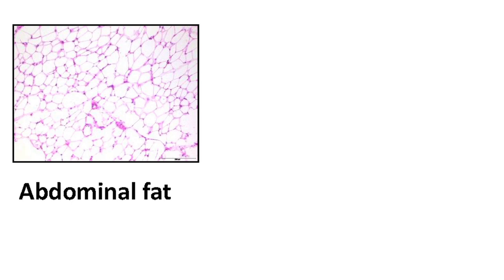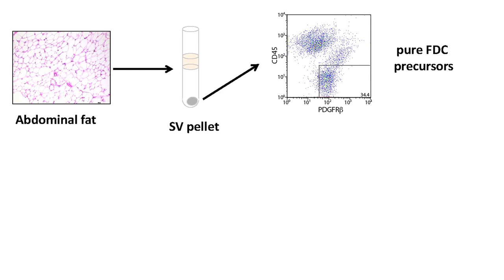This is good but still circumstantial evidence. The final experiment to really nail our hypothesis consisted of taking purified pericytes — a cell fraction containing nothing but pericytes — and showing that we can make them differentiate into follicular dendritic cells. We took abdominal fat from mice and derived a pure fraction of pericytes. We made absolutely sure no immune cells were present in this fraction.